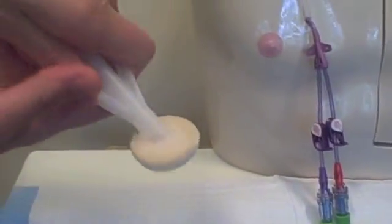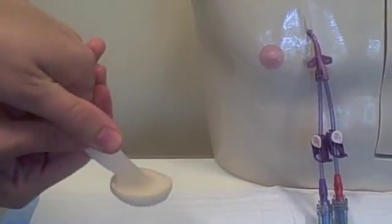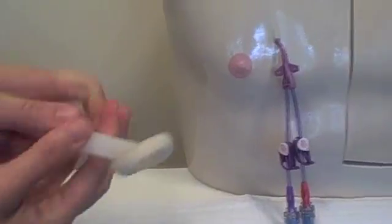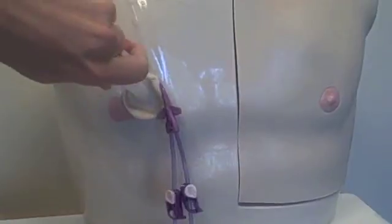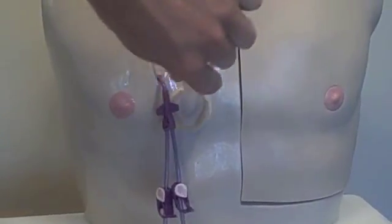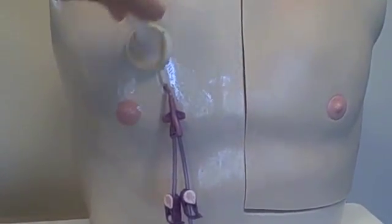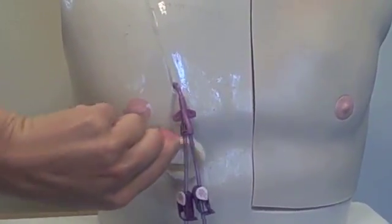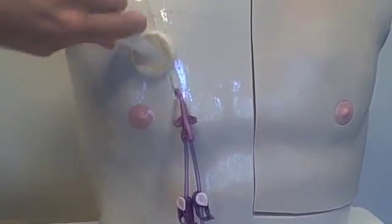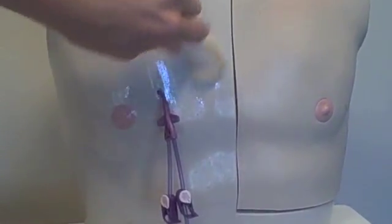Next, you will use the chloroprep swab. In order to use, squeeze the wings together to release the chlorohexidine into the sponge. Use the chloroprep swab to clean around the insertion site, moving both back and forth and in a circular motion at the same time. Clean in an outward and back and forth motion for 30 seconds. Allow the area to dry. While drying, do not blow on or fan the area. Drying may take 1 to 3 minutes.